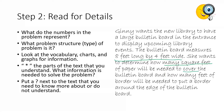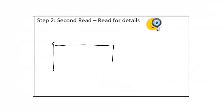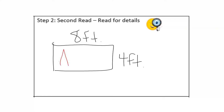Ginny also wants to know how many feet will go around the edge of the bulletin board. When I want to measure the distance around a space, I am looking for the perimeter, which is measured in units like feet. Now I know the dimensions of my bulletin board — eight feet by four feet. I want to find the area, which is the space inside, and I want to find the perimeter, which is the distance around the space.